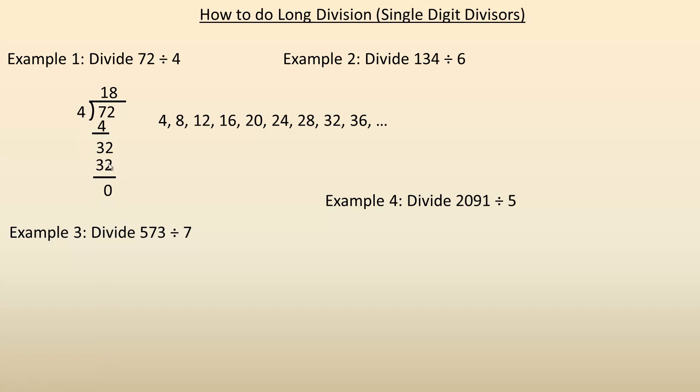And we subtract and get a remainder of 0. Now if the remainder is 0, a lot of times you won't see people actually write remainder 0 here, but it's not incorrect to write that either. So 72 divided by 4 is 18 with a remainder of 0.